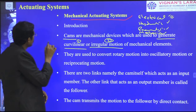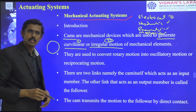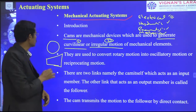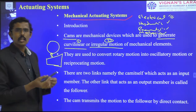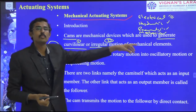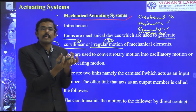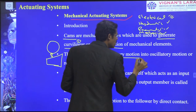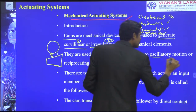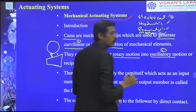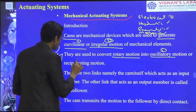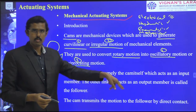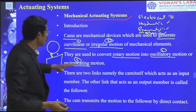CAMs are mechanical devices which are used to generate curvilinear or irregular motions of a mechanical element. The CAM profile can generate circular motions, flat reciprocating up-and-down motions, and linear irregular motions depending upon the CAM profile design. They are used to convert a rotary motion into axillary motions or reciprocating motions.